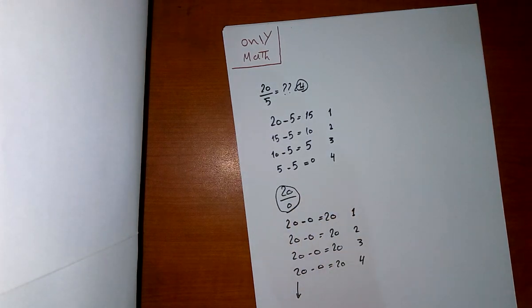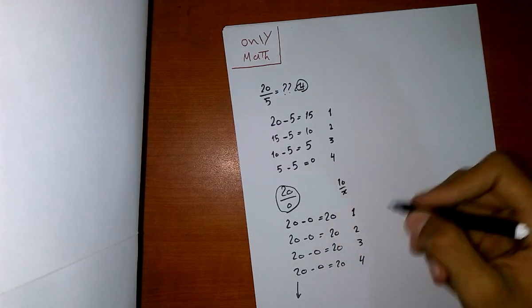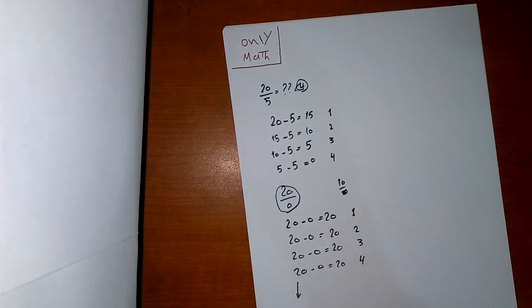for 20 over 0, or any number—maybe 10 over 0, 5 over 0—there is no accurate value for this. But in the next video, we will know what is